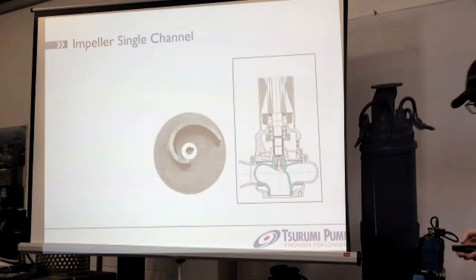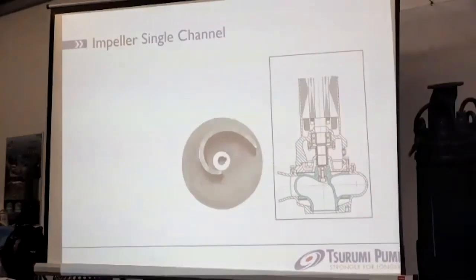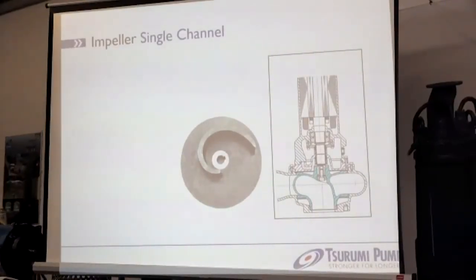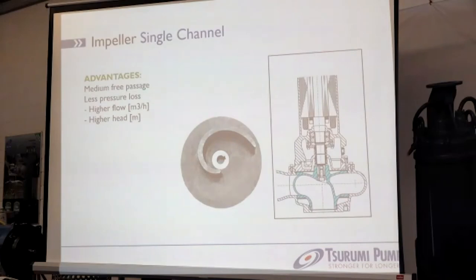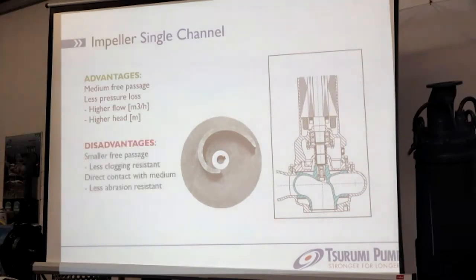The next impeller type is the single channel impeller — and the arguments for single and double channel impellers are fairly the same. Advantages of a single channel impeller: medium free passage, which you can see directly on the drawing — smaller than the vortex impeller but still bigger than other impeller forms we will discuss later. There is less pressure loss, resulting in higher flow and higher head.